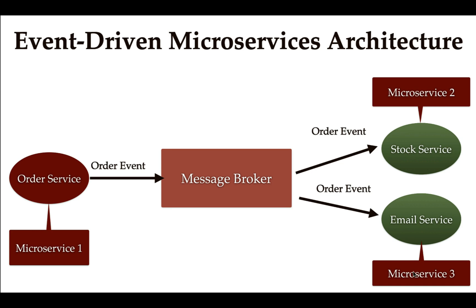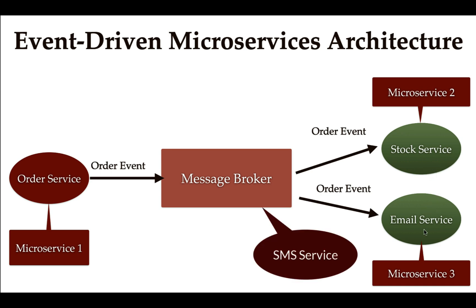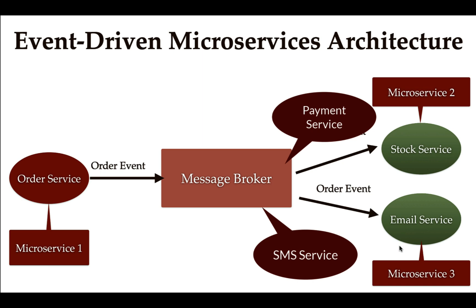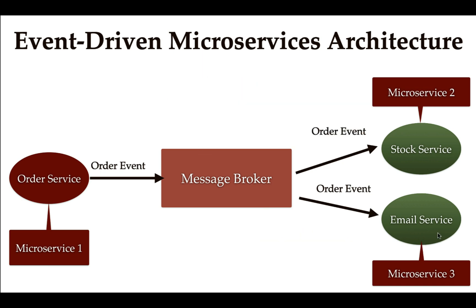To keep it simple, let's consider we have three microservices, but you can create as many as you want — for example, an SMS service, payment service, or packaging service. In event-driven microservice architecture, we have to use a message broker for asynchronous communication between multiple microservices. A message broker can be RabbitMQ, Apache Kafka, or Apache ActiveMQ.